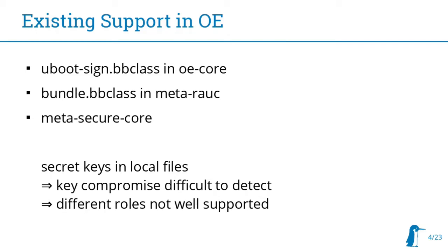All of these access keys differently and are configured differently, so it's not nice to use them in a single project. They store the keys to sign the artifacts as simple files in your filesystem — sometimes even stored in the BSP itself. Anyone who has access to this key can copy it and you won't even know the key has been compromised. And as I said, different roles: for example you have your BSP developer who builds images and have someone else who has the authority to sign releases — that's not really supported in these cases.